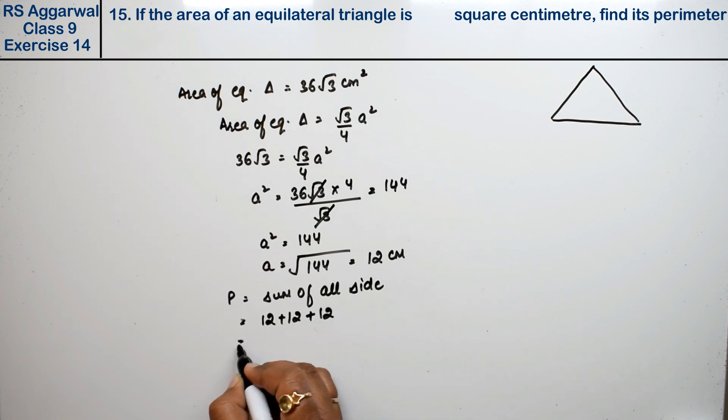So how much is it? 2 plus 2 plus 2 is 6, giving us 36 centimeters as the answer.